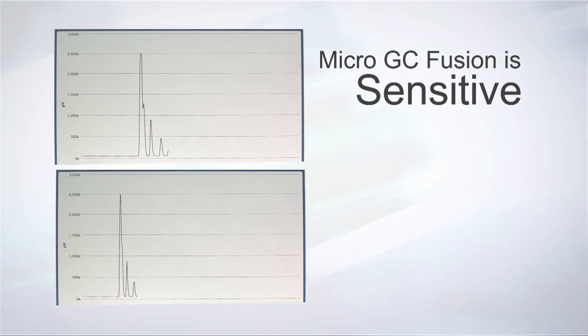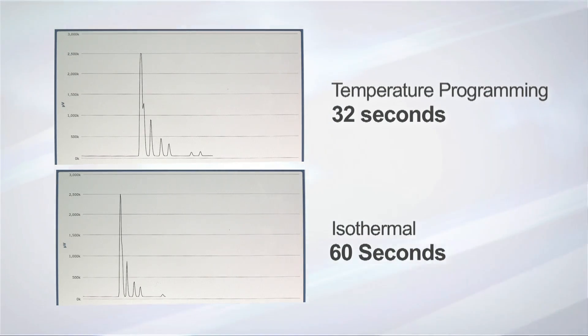Micro GC Fusion is sensitive. In a natural gas analysis, temperature programming sharpens and intensifies peak heights when compared to an isothermal run and also cuts the analysis time in half.